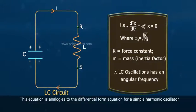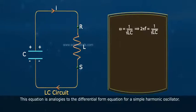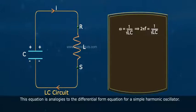Therefore, LC oscillations have an angular frequency ω equals 1 divided by the square root of LC. That implies 2πF equals 1 divided by the square root of LC, so F equals 1 divided by 2π times the square root of LC.